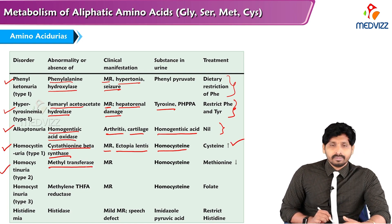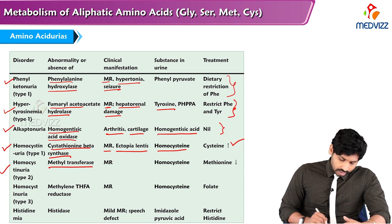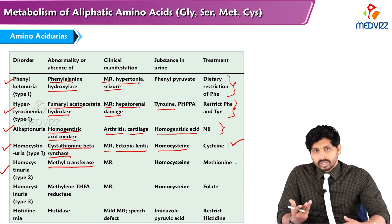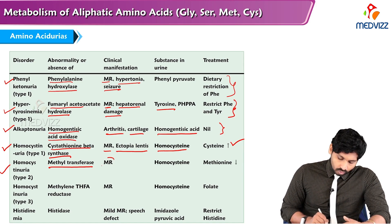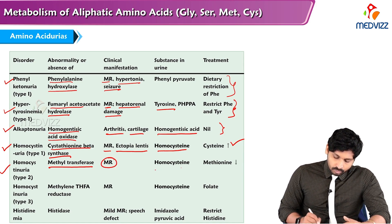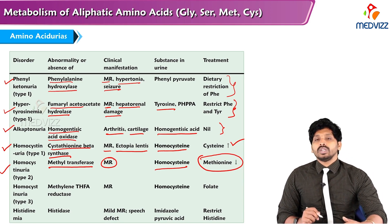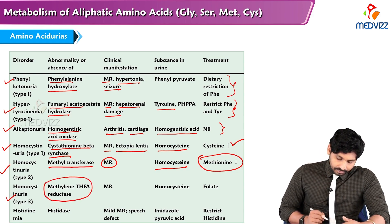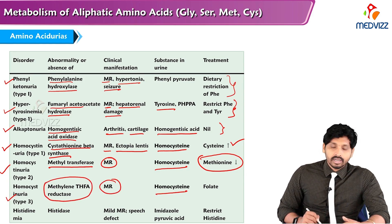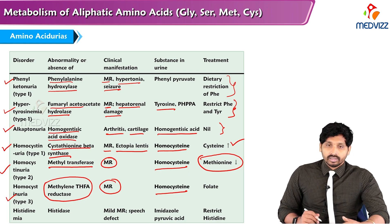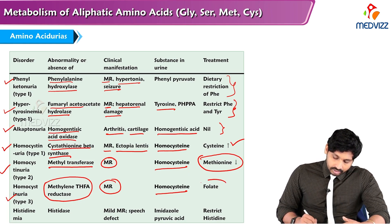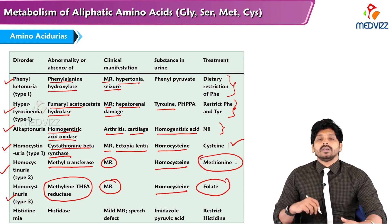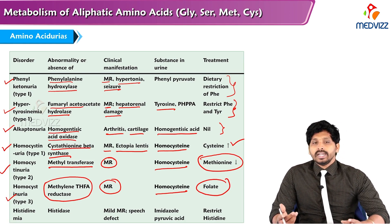Homocystinuria type 2 is due to SAM methyl transferase deficiency, leading to elevated homocysteine levels and mental retardation. Homocysteine appears in the urine, and treatment is to restrict methionine in the diet. Homocystinuria type 3 is due to methylenetetrahydrofolate reductase deficiency, also leading to mental retardation with homocysteine accumulation in the urine. Correction requires providing vitamin B9, as folic acid deficiency underlies this condition.